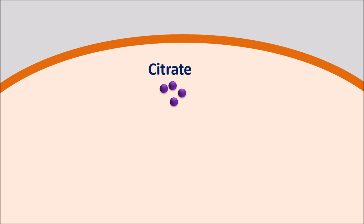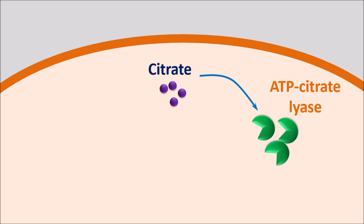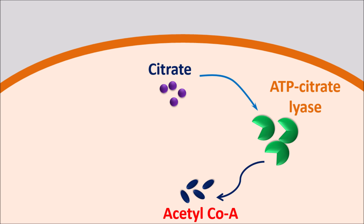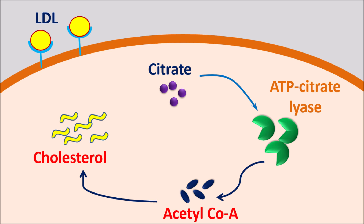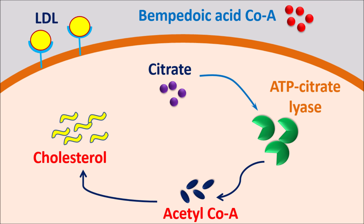Within the hepatocyte, citrate acts as a source of acetyl-CoA coming from the TCA cycle. This citrate is acted upon by ATP citrate lyase, commonly known as ACL, and converted into acetyl-CoA. Finally this acetyl-CoA is converted into cholesterol by several steps through the mevalonate pathway. This cholesterol is then packed as LDL cholesterol and transported into the bloodstream. Now Bempedoic acid, as an ACL inhibitor, blocks ATP citrate lyase so that it inhibits the synthesis of acetyl-CoA and cholesterol within the liver.